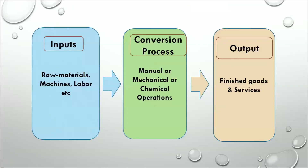We have a picture showing how inputs convert into output with the help of some process. We have inputs like raw materials, machinery and labor. When we put all such things into some kind of process — either manually or mechanically — we get some output in the form of finished goods or services. To get any kind of output or service, we must have some kind of inputs along with a basic process.